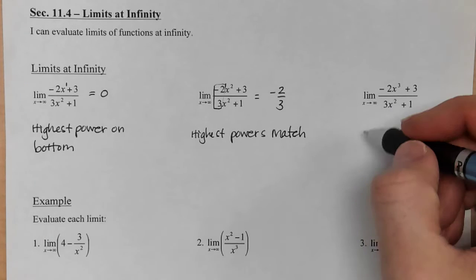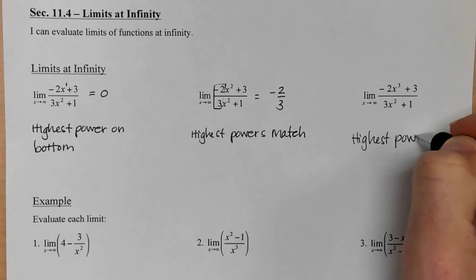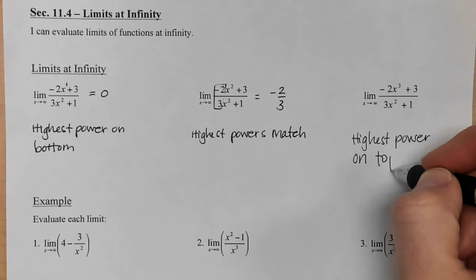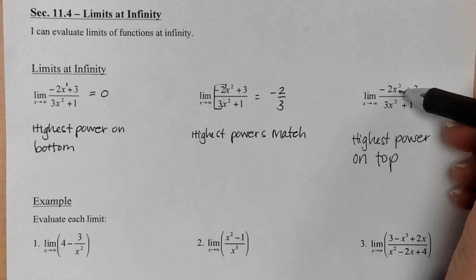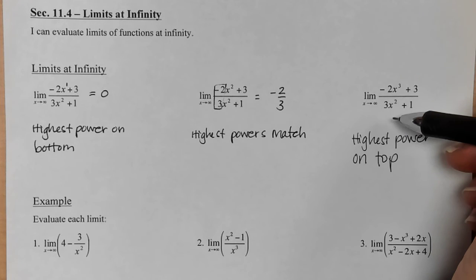The last case is when the highest power is on the top. When the highest power is in the numerator. And so no matter what I'm plugging in here, if it's 1,000, I cube it, I'm getting a very large number, and the bottom just can't keep up. Even though you're squaring it, it's not going to keep pace with what's happening on the top.